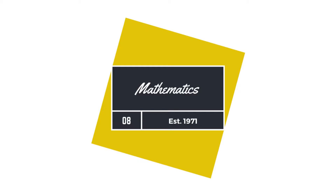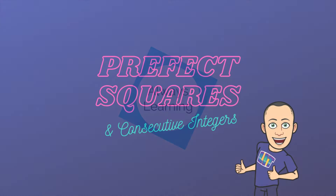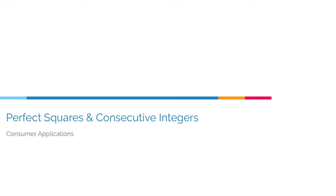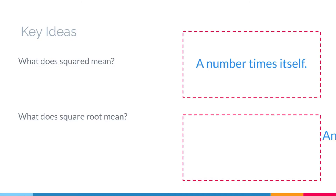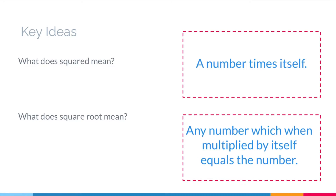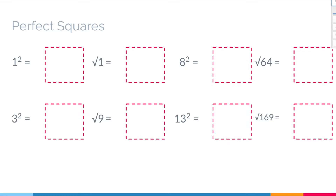Welcome back. Today we're going to be talking about perfect squares and consecutive integers. Let's get started by taking a look at a little vocabulary. In order to work with perfect squares and non-consecutive integers, we first need to know what 'squared' means. Squared means a number times itself. And square root means any number which, when multiplied by itself, equals that number.